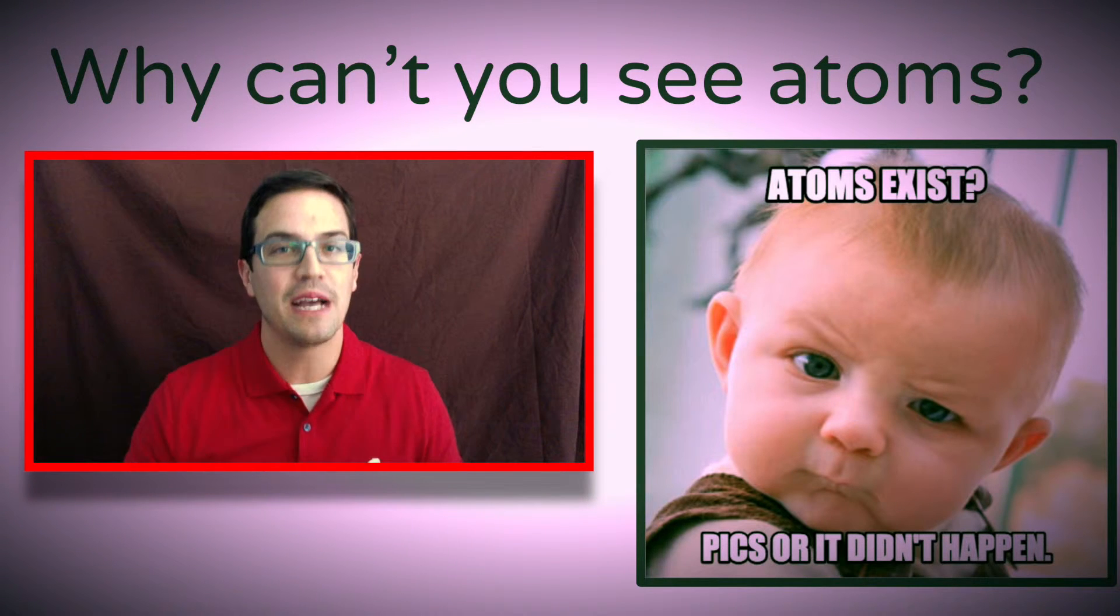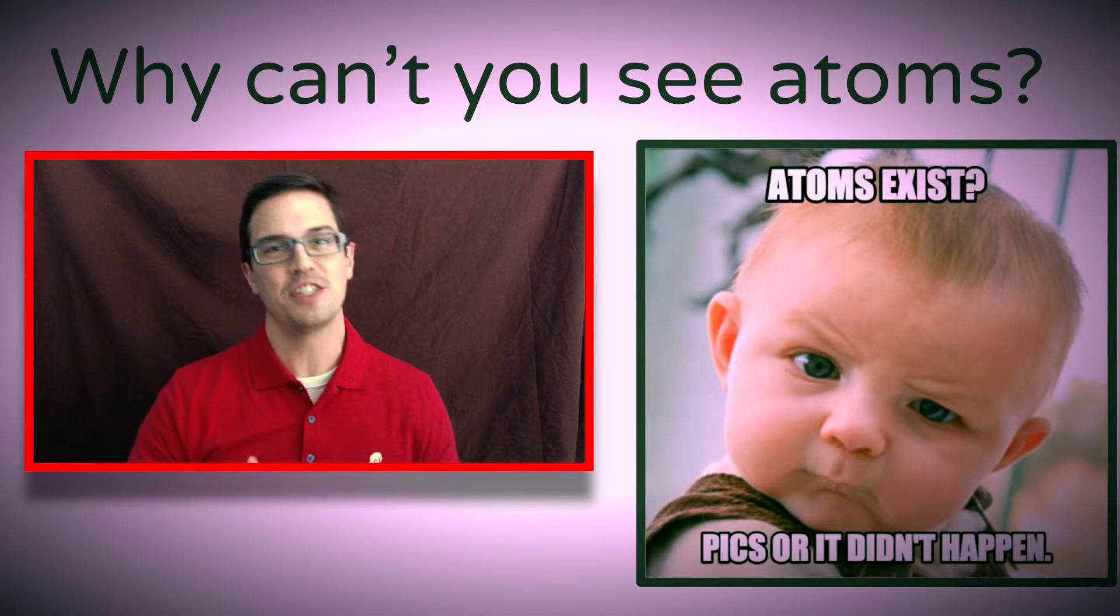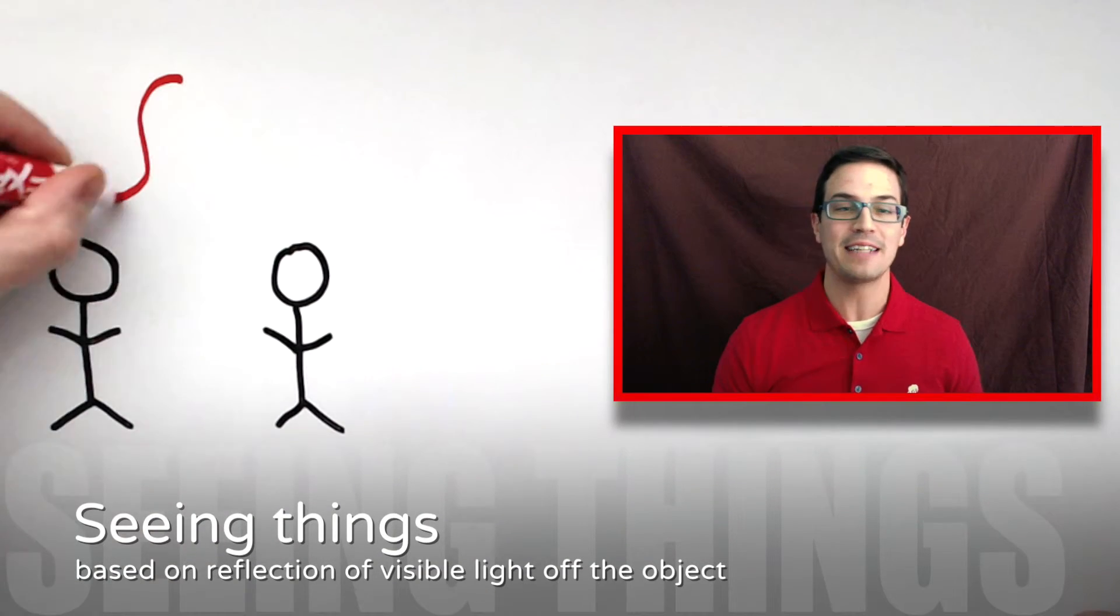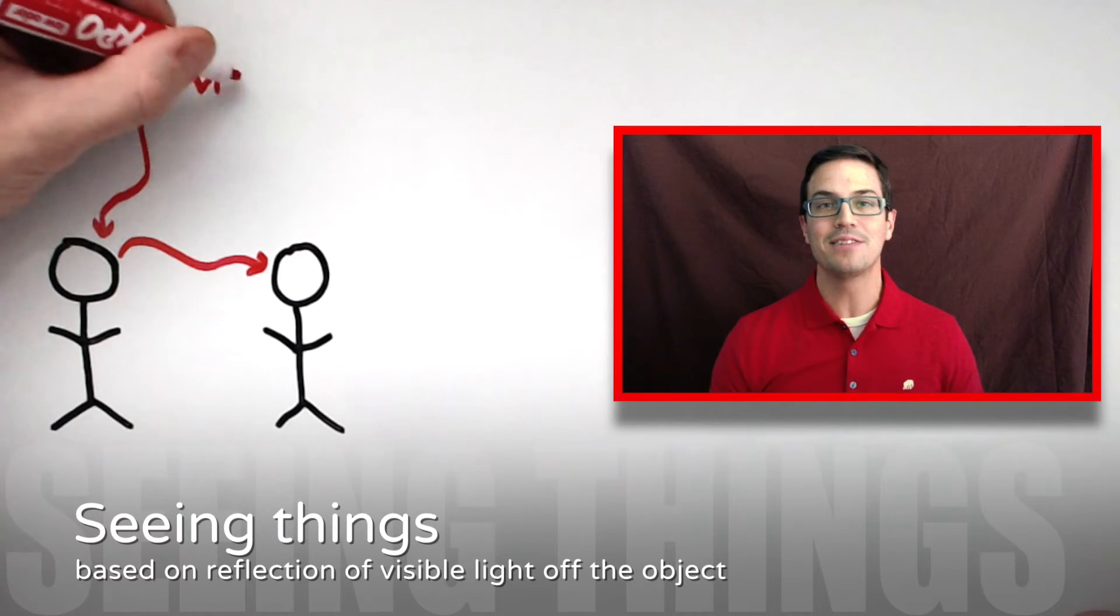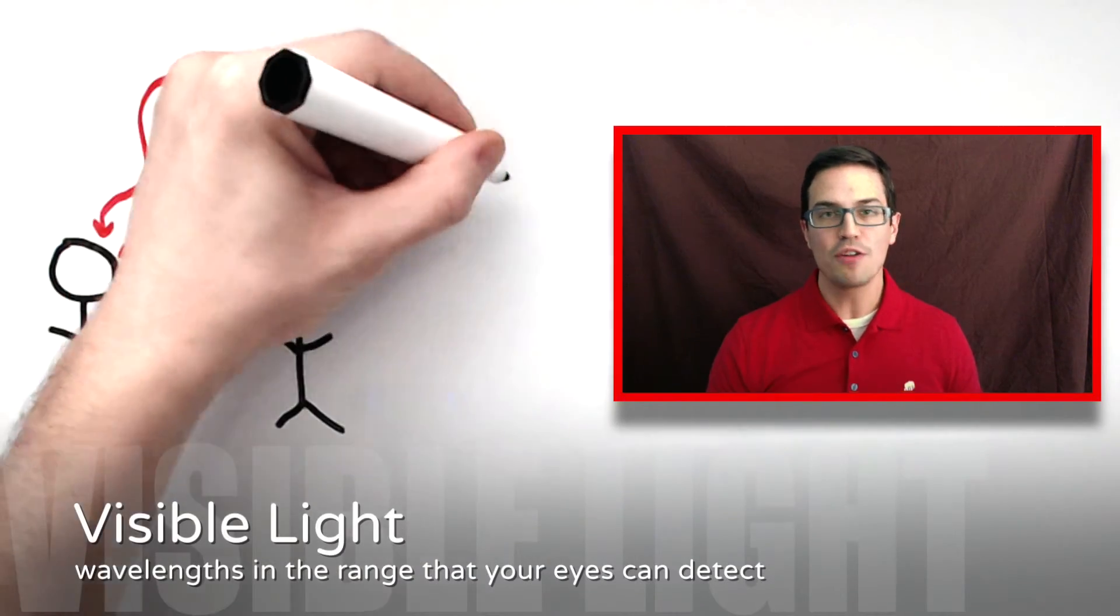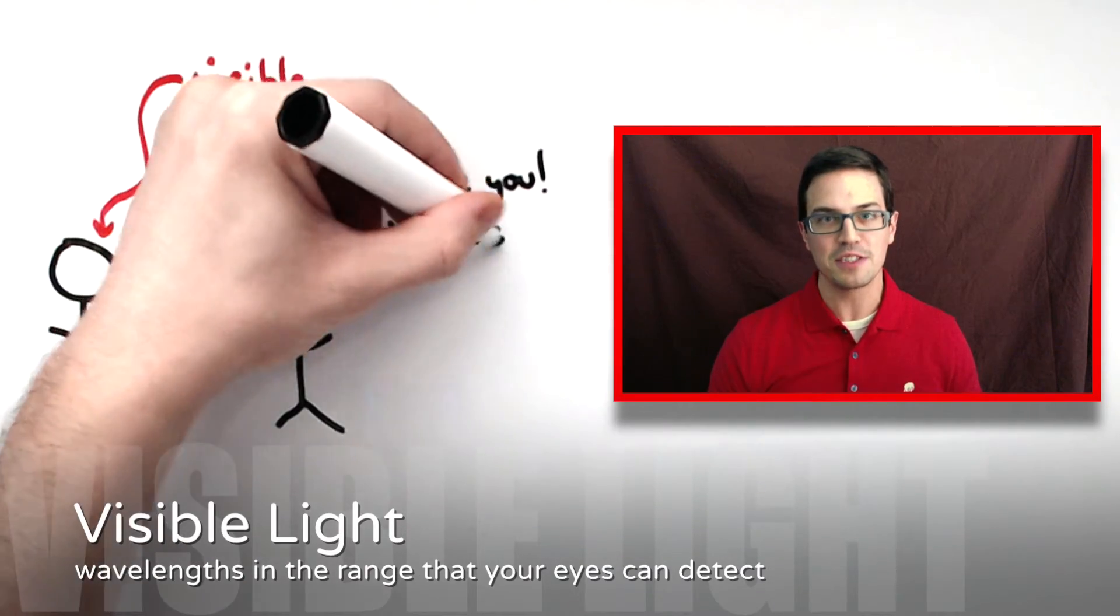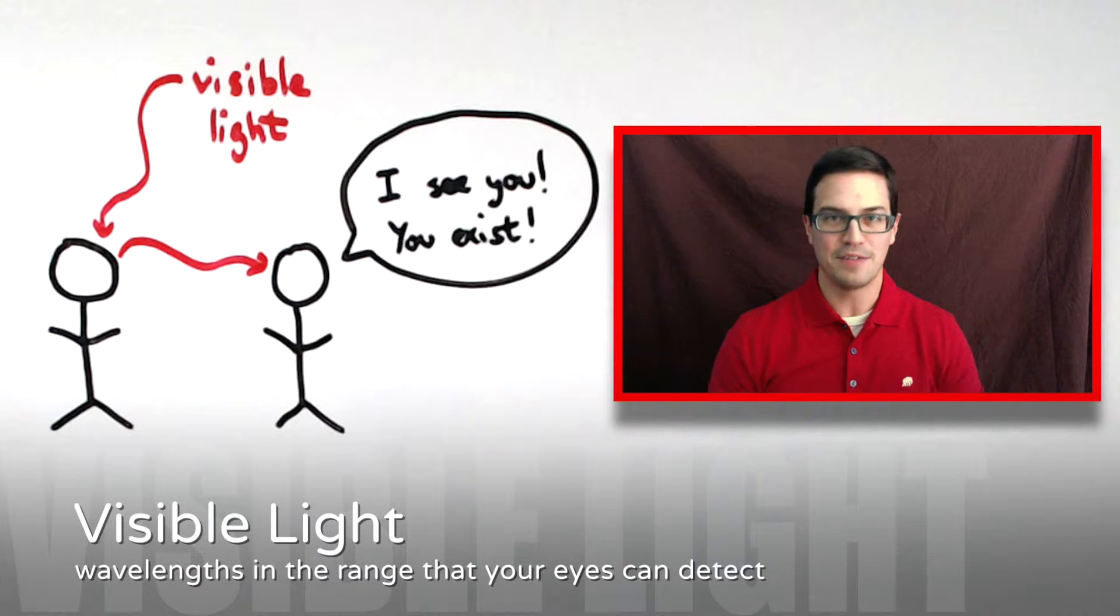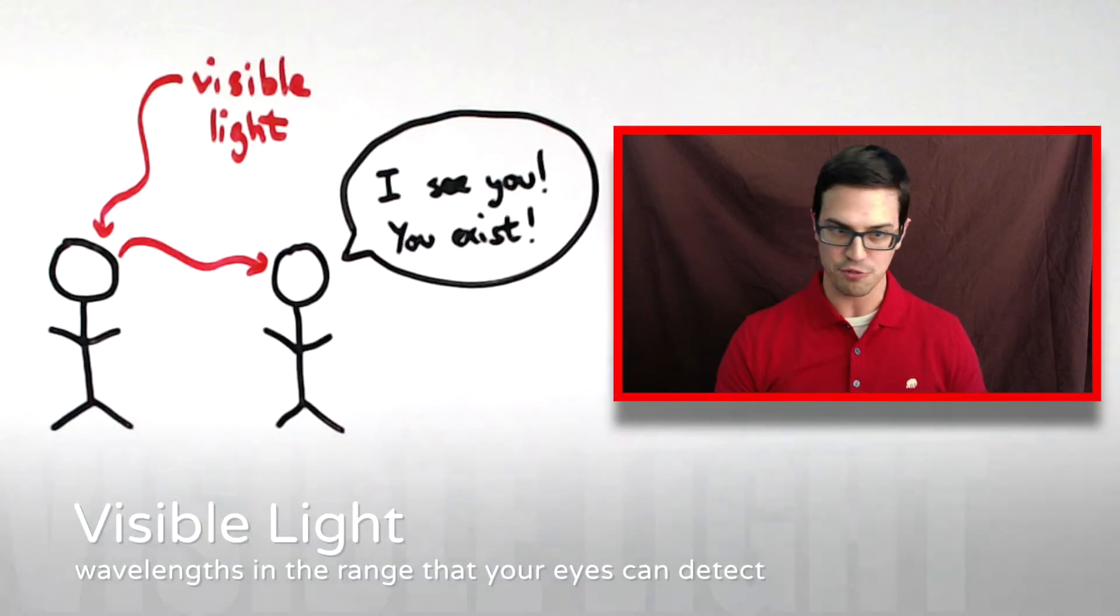You might be thinking, why can't you actually see atoms though? That would be the easiest proof if you could actually see them. Well, seeing anything is based on light reflecting off of an object and back into the eyes of a person. The visible light that you see has a certain wavelength that is smaller than most of the objects that you see every day, but it's the right size for you to still be able to see it based on the size of your eyes. This wavelength is just right.